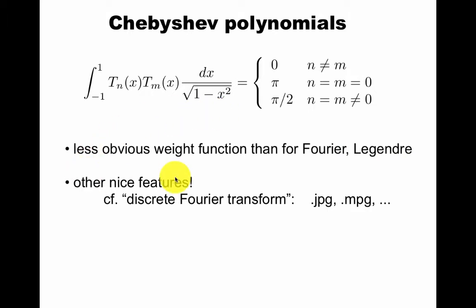But it has other nice features. For example, the so-called discrete Fourier transform used in digital processing uses these polynomials. This is the third example, and we'll see that there are many others.